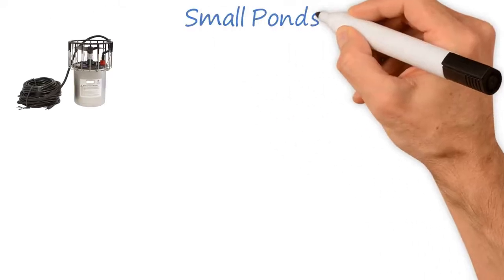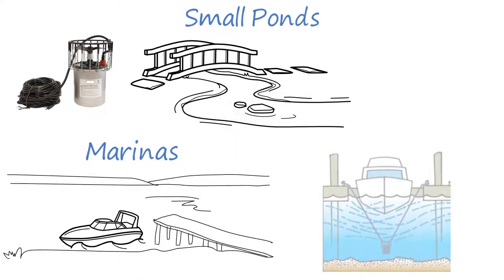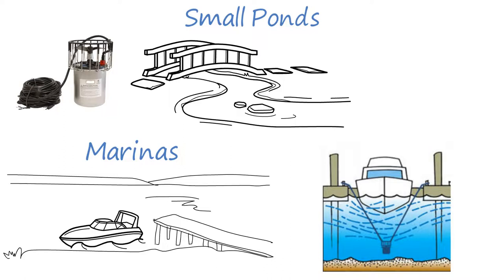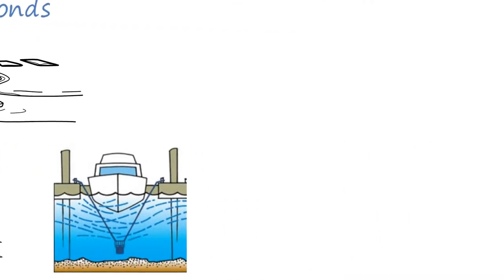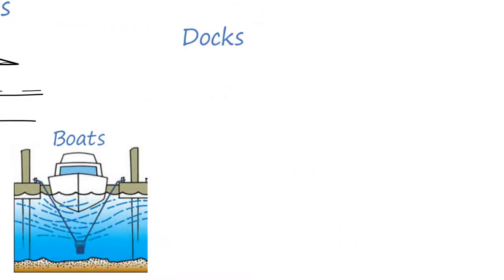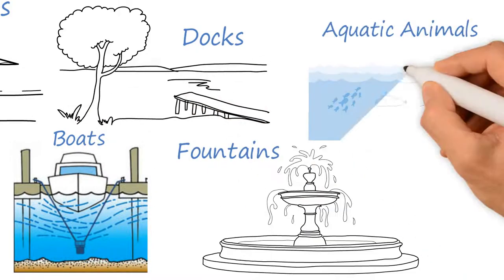De-icers, commonly found in small ponds and marinas, move warm water from the bottom of the body of water to the top, creating an ice-free space around boats, docks, fountains, and aquatic animals.